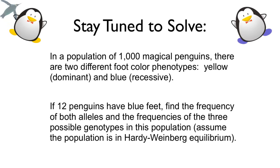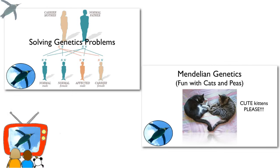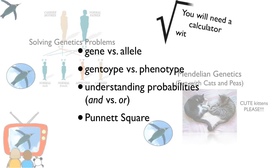This is the one we're going to do. There's going to be a population of individuals that vary in a particular phenotype, and you're going to calculate the allelic frequencies and the genotype frequencies. I am assuming some knowledge here. If these principles are not familiar to you, check out my videos on Mendelian genetics and solving genetics problems — links are in the description below. You will also need a calculator with a square root function to solve these problems.